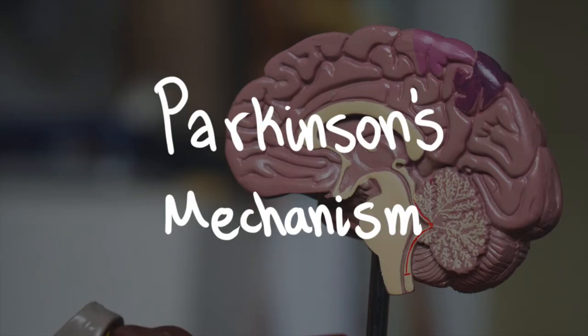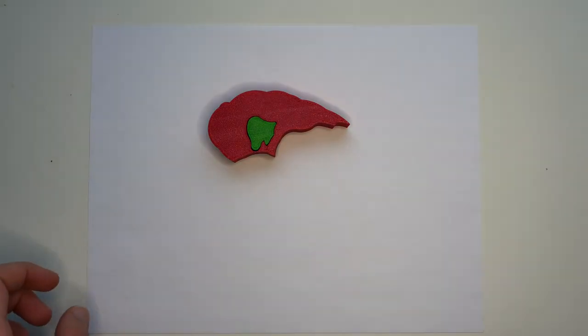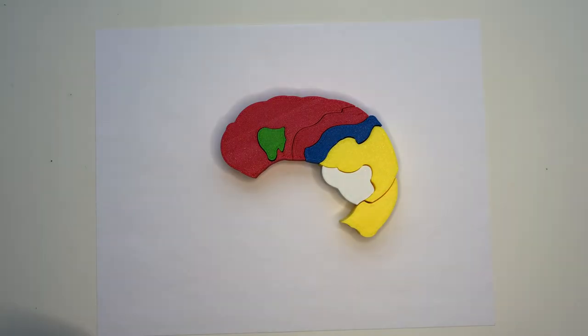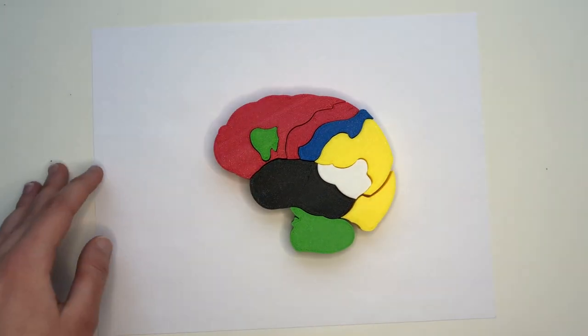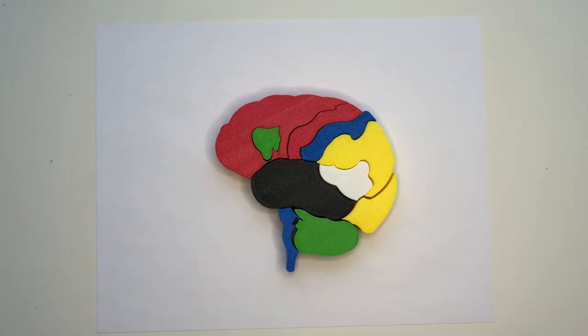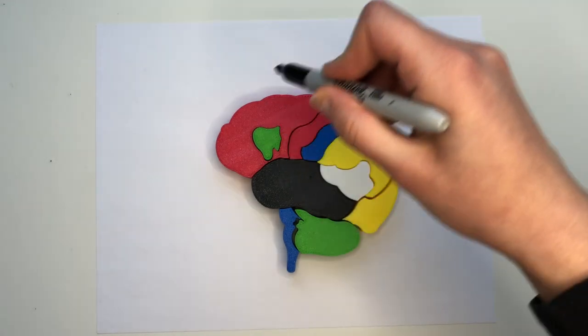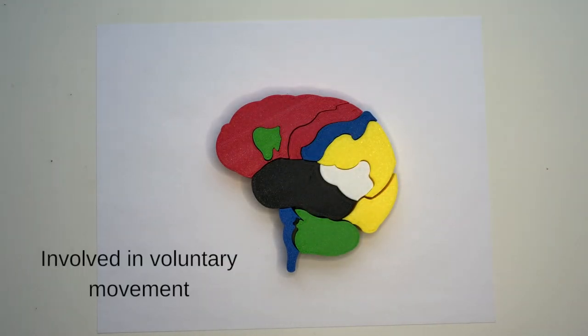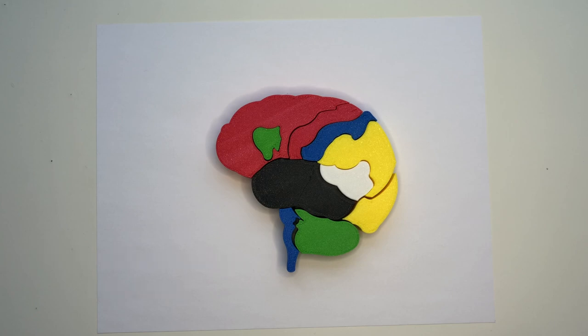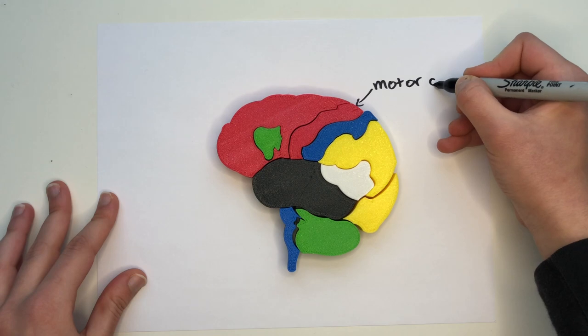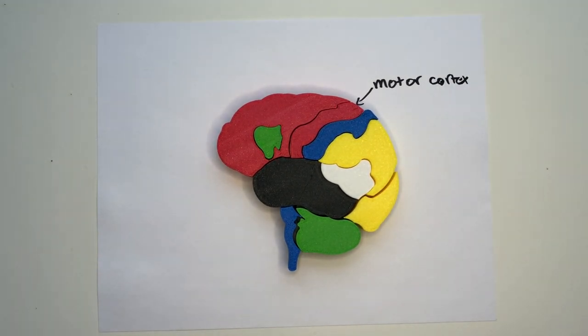So what causes Parkinson's? The loss of a certain type of neuron in a certain region of the brain. To help us get a bit more specific than that, here's a model of a brain. We don't need to know about all of these different sections of the brain, and we'll only focus on those involved in Parkinson's. All we need to know about the forebrain, which is located around here, is that it's involved in voluntary movements, and more specifically contains the motor cortex, which we're interested in. Now, what's very important for us in Parkinson's is the basal ganglia, located right around here.